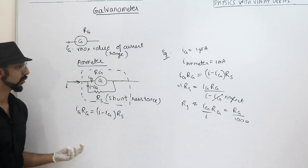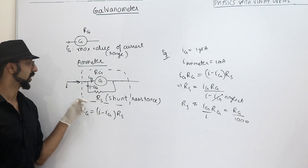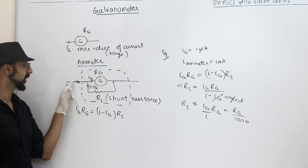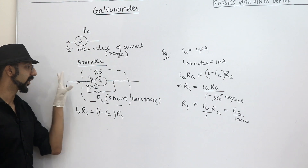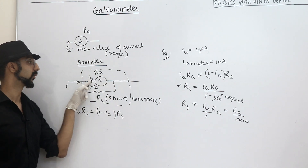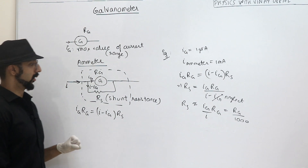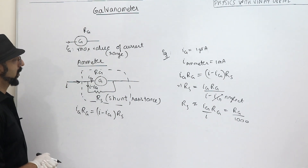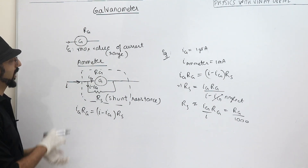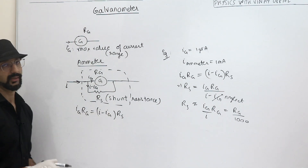This is quite straightforward. By attaching a shunt resistance, what we are basically doing is ensuring that the current entering the Ammeter is more than the current through the Galvanometer. So that is the conversion of a Galvanometer to an Ammeter by attaching a shunt resistance.